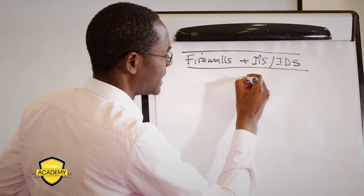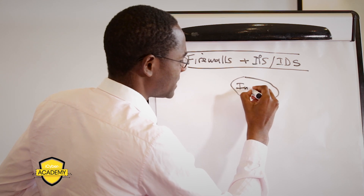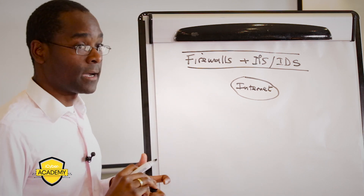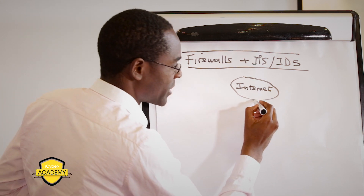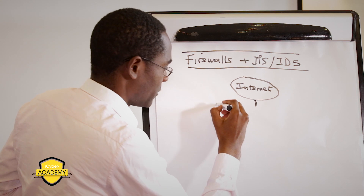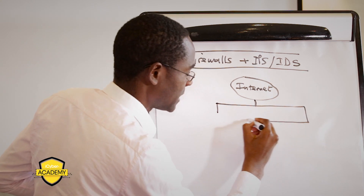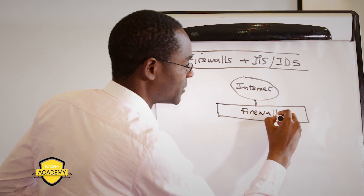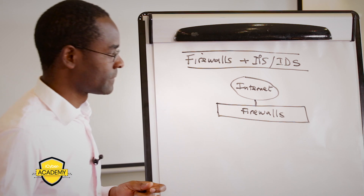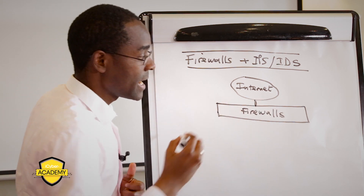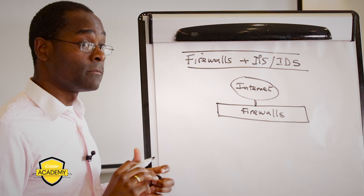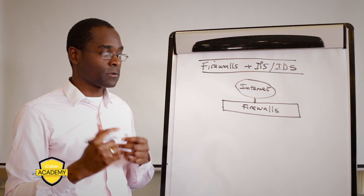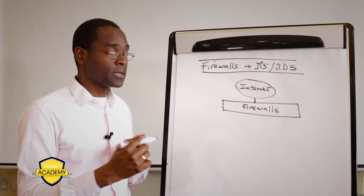I'm going to draw my internet connectivity here to put a bit of context from an enterprise point of view. Usually, at the entry point of your network, most companies — if not all — will have a firewall. So here I'm talking about a network firewall. What exactly is this thing doing? We're trying to protect any network communication entering through by filtering exactly the type of connectivity you'd expect.